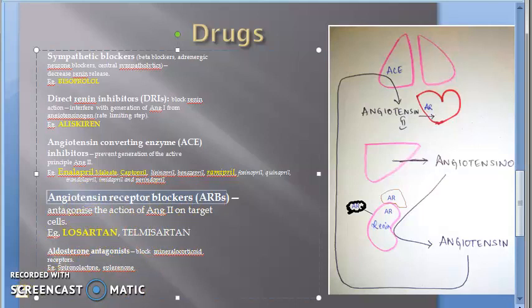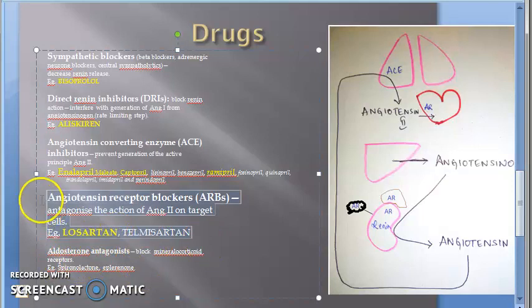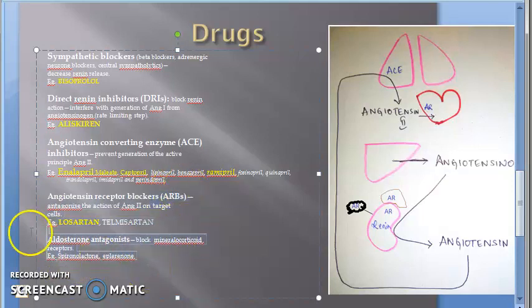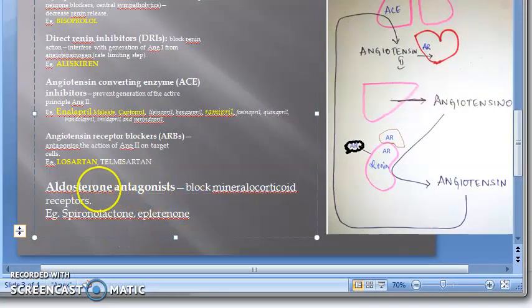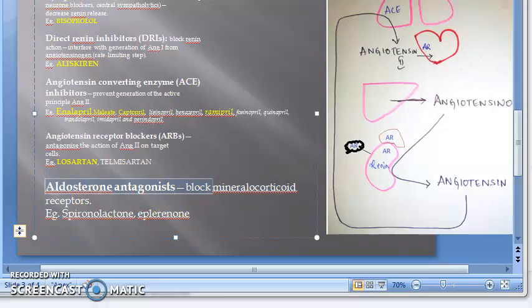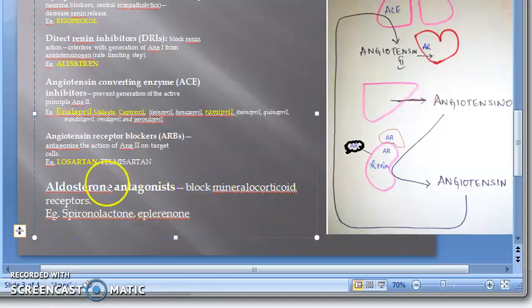Lastly, aldosterone antagonists: these have the opposite action of aldosterone. Aldosterone increases sodium reabsorption and raises blood pressure. An aldosterone antagonist blocks the mineralocorticoid receptors and lowers blood pressure. The example is spironolactone.